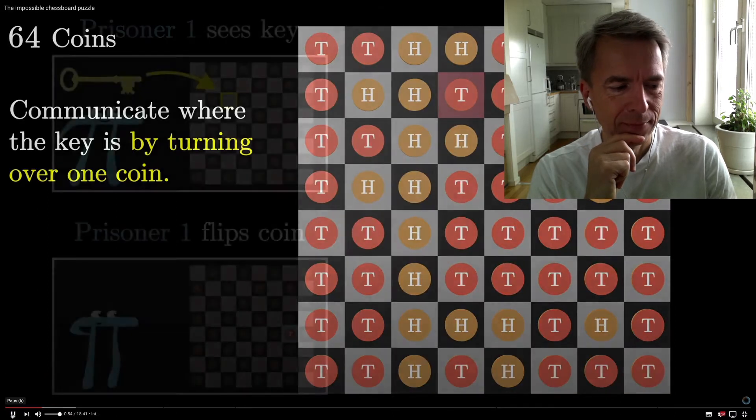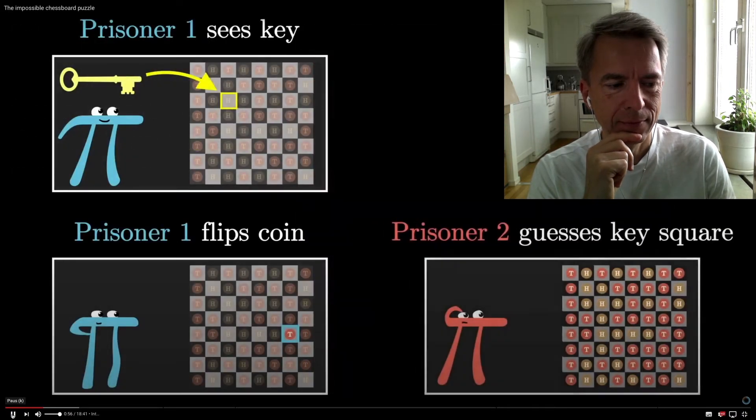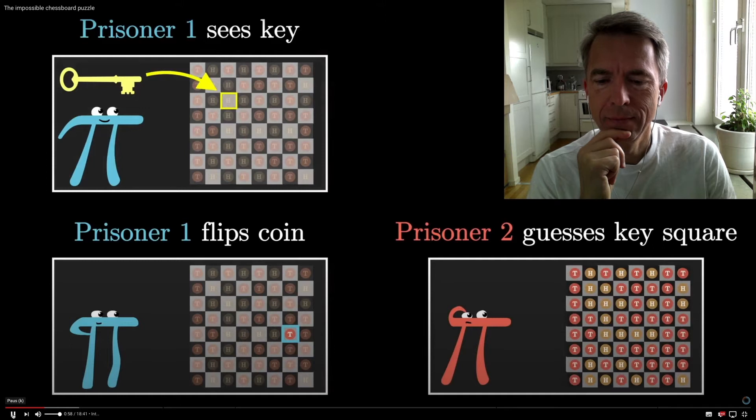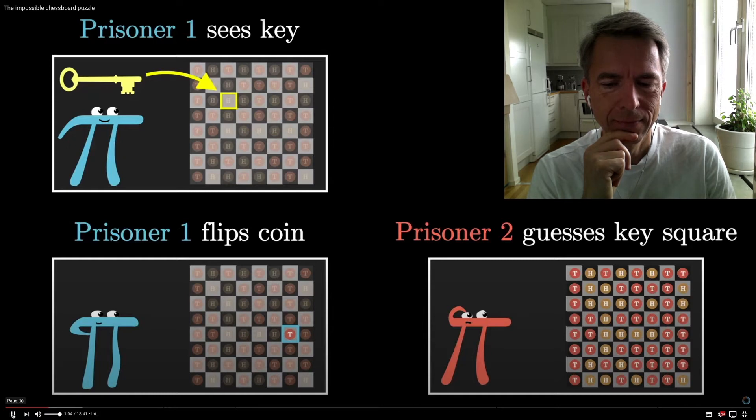At that point you walk out, your fellow prisoner walks in, and with no information other than the set of heads and tails that they're looking at, which you've only barely tweaked, they're supposed to deduce where the key is hidden.